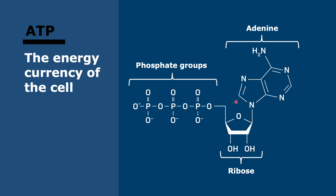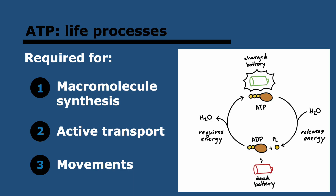Structure-wise, you can see it's a nucleotide, just like the ones we find in DNA or RNA, so it has a ribose. It also has an adenine base, and it has three phosphate groups. As we'll see, this is the key to the energy currency — it's these three phosphate groups.